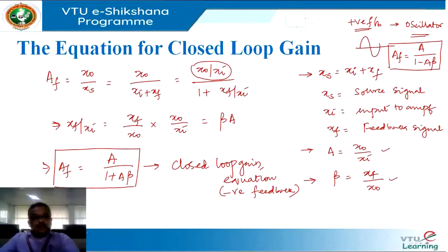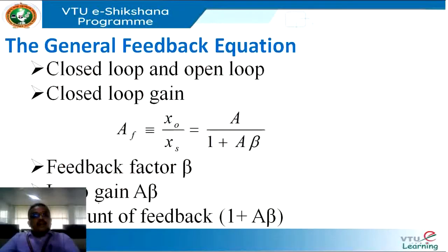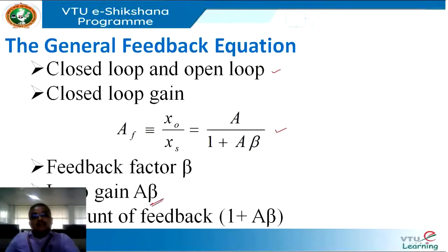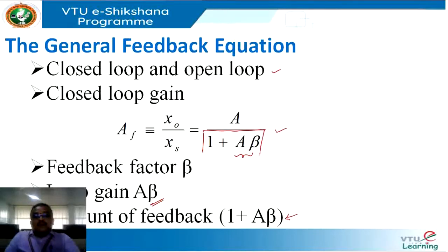With this preamble on feedback introduction, we shall now understand why we require feedback. Summary: closed loop gain Af equals A divided by 1 plus Aβ; the feedback factor is Aβ, and we call this the loop gain because A and β come within one loop. This Aβ product is the amount of feedback given back to the input side.